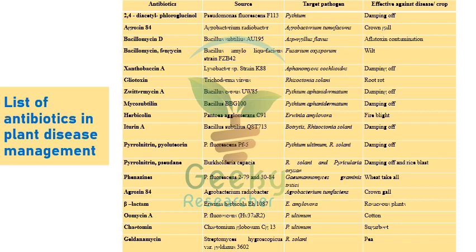Now we will see the list of antibiotics in plant disease management. 2,4-Diacetylphloroglucinol (2,4-DAPG) is isolated from Pseudomonas fluorescens and is targeted against Pythium. Questions may ask what this antibiotic is isolated from, or what pathogen it targets. Agrocin 84 is derived from Agrobacterium radiobacter.